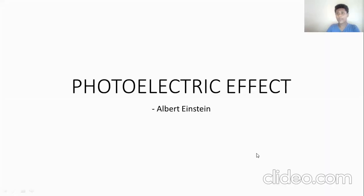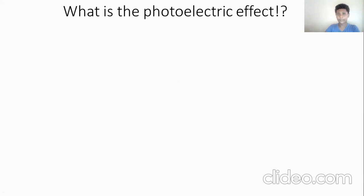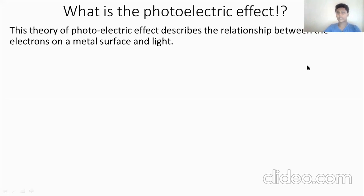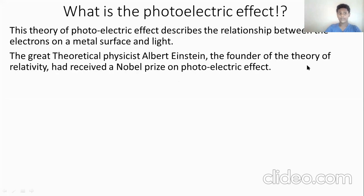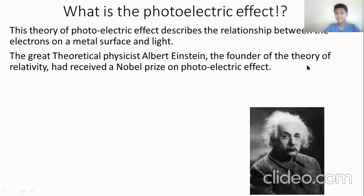Photoelectric effect was proposed by Albert Einstein. The great theoretical physicist Albert Einstein was the founder of the theory of relativity, and he was renowned for that topic. He had also received the Nobel Prize on his observation and founding of photoelectric effect. This is Albert Einstein, the great theoretical physicist.